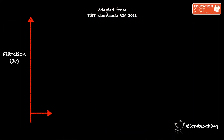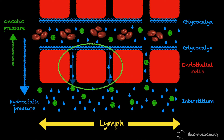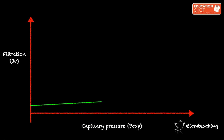Normally, filtration occurs at pretty low levels because of the high colloid osmotic pressure gradient across the glycocalyx. We can plot this on a graph of filtration by capillary pressure. The increase in filtration with increasing capillary pressures is initially low — a relatively flat line — because as fluid flow through the endothelial cleft increases, the small amount of albumin there is washed out, so the oncotic pressure gradient opposing filtration increases. Once all the albumin has been washed out, filtration rapidly increases. This transition point is known as the J-point. With normovolemia, capillary pressures are fairly close to the J-point.